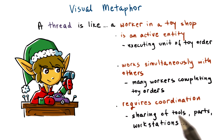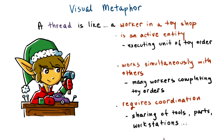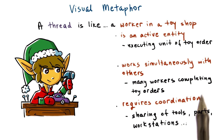And finally, while the workers can work simultaneously, this comes with some restrictions. Workers must coordinate their efforts in order to operate efficiently. For instance, workers may have to share tools, share some working areas, their workstations, or even parts while they're in the process of making toys and executing the toy orders.